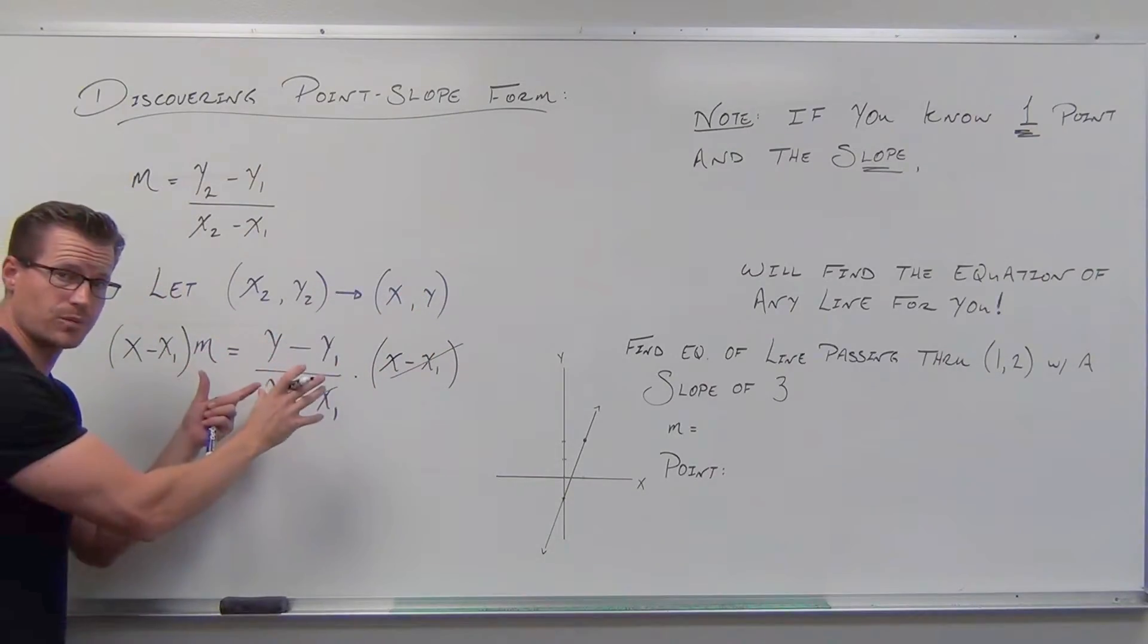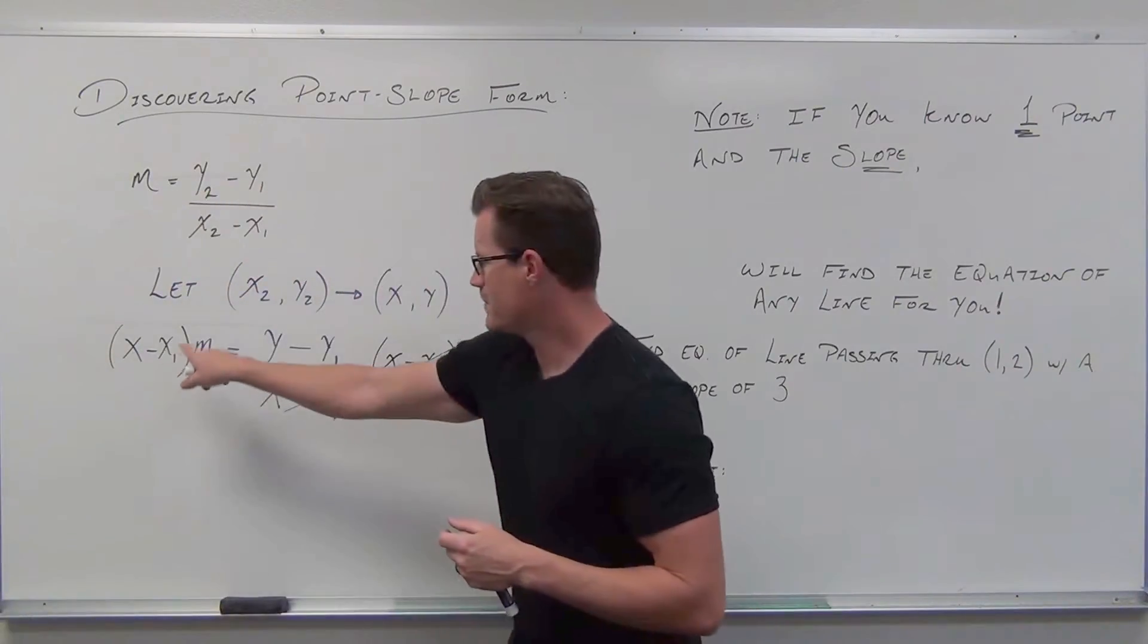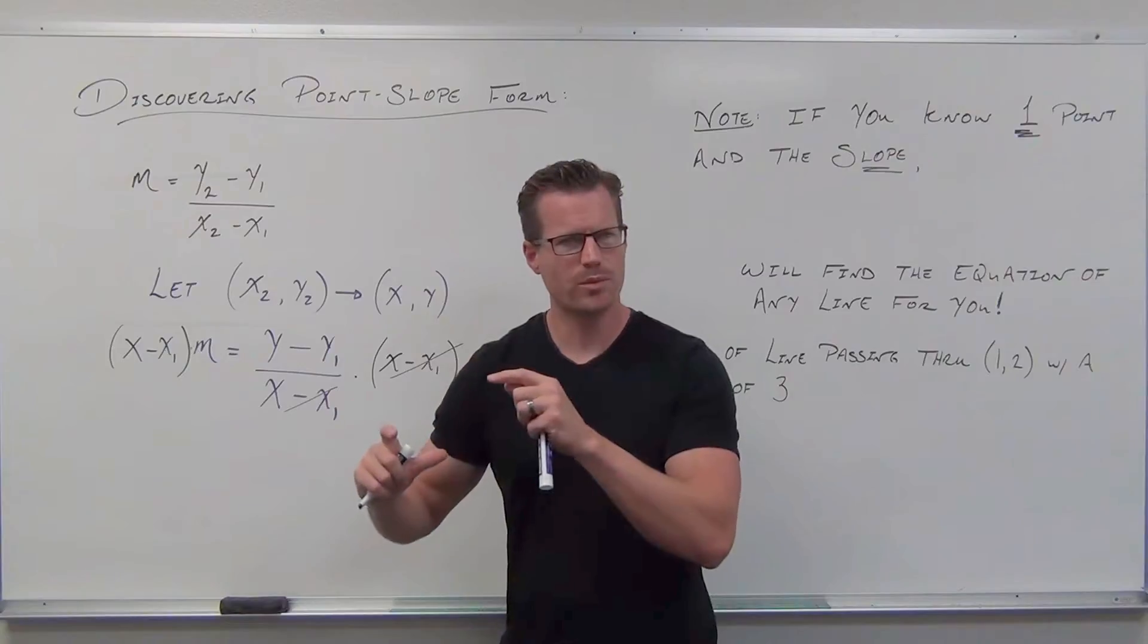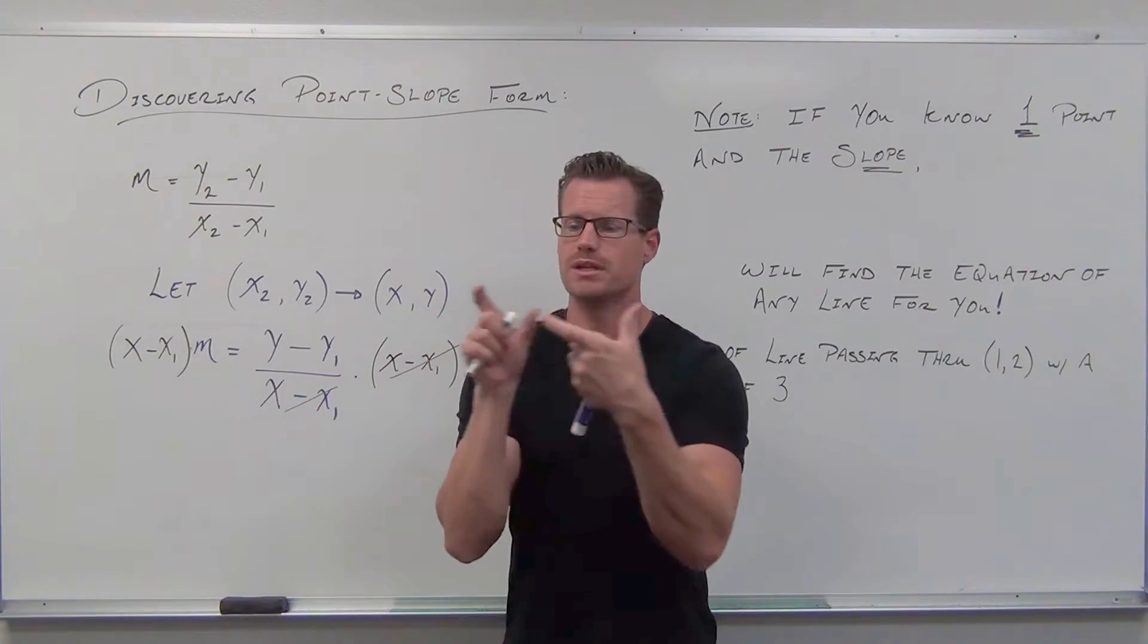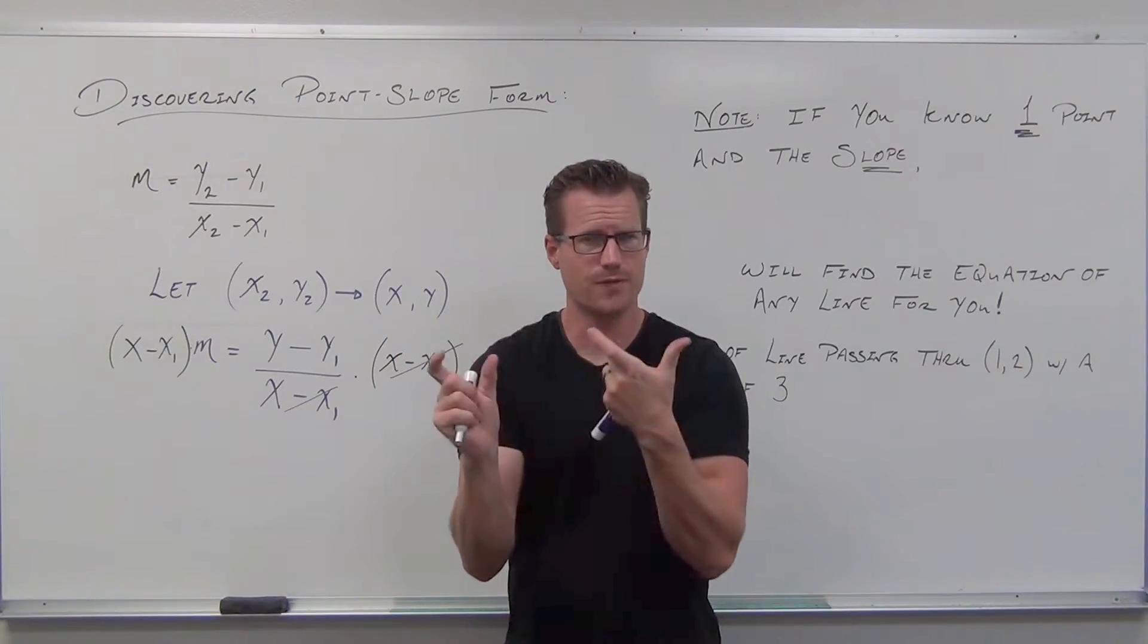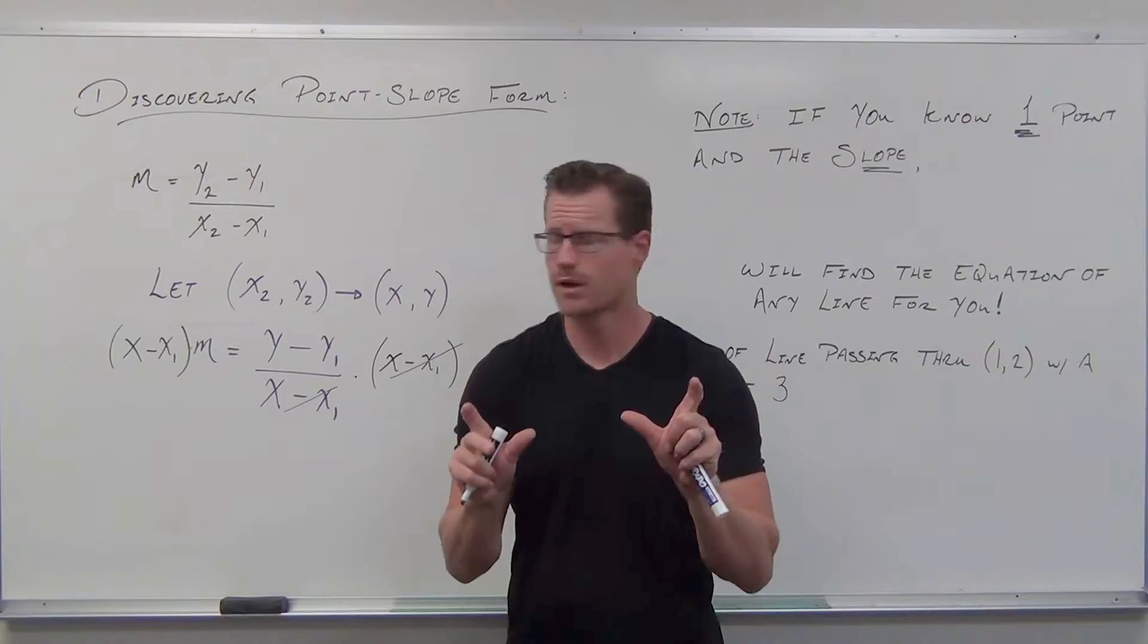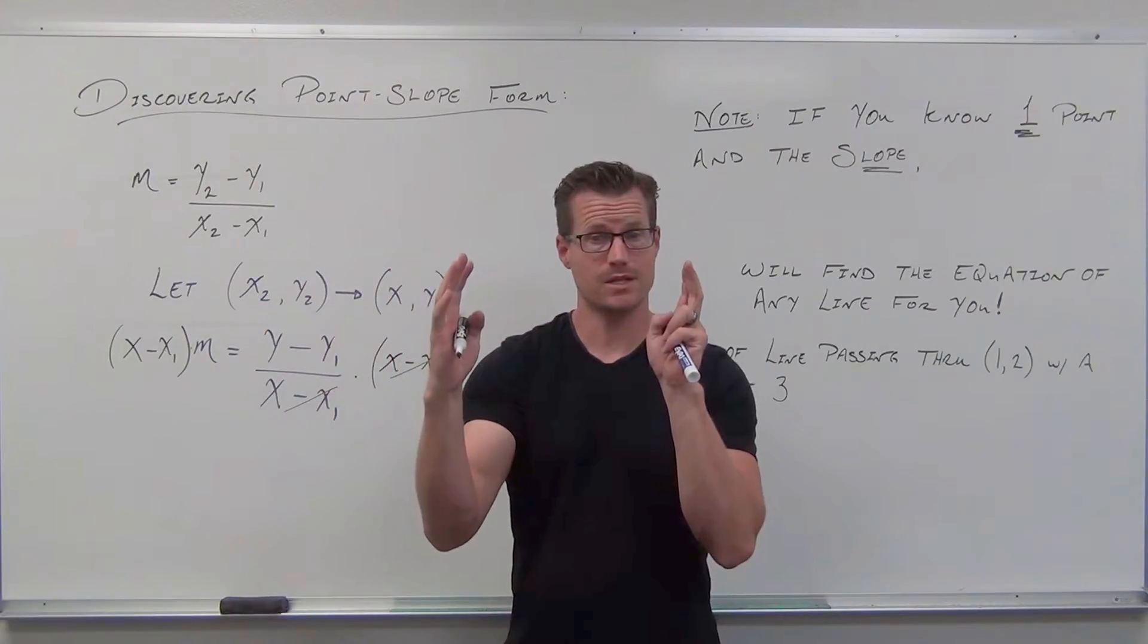I don't really like how this m is behind my parenthesis. We normally write the m in front of parenthesis when we multiply. Multiplication is commutative, which means I can switch junk around. I'm going to write this as m times that quantity x minus x1.